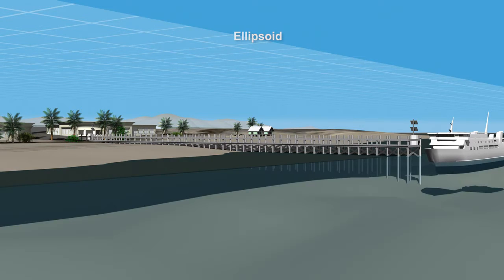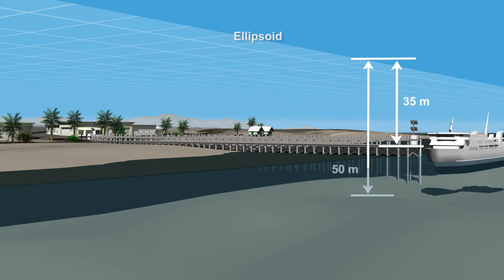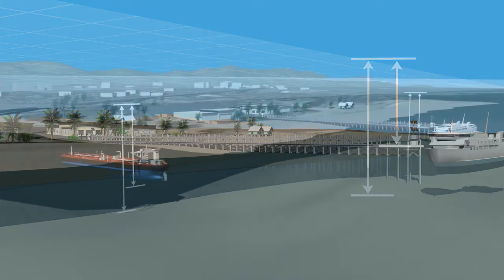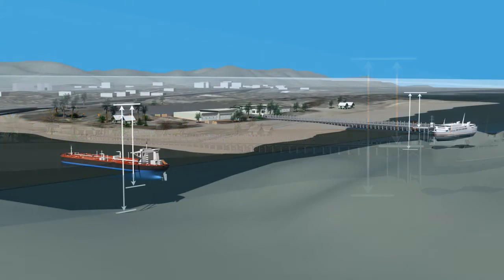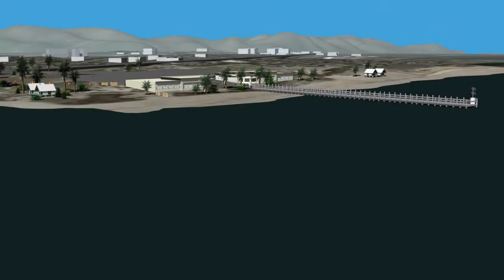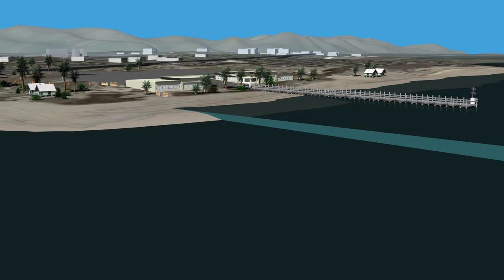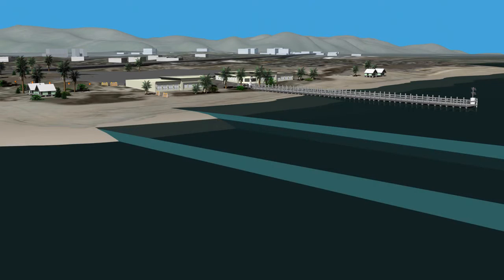LIDAR and sonar data tells us that our pier is 35 meters below the ellipsoid, and the seafloor is 50 meters below the ellipsoid. With this information, we might think we know enough to keep our ships from running aground. But, because water levels are always changing with tides and other meteorological and hydrodynamic effects, we need to use a different reference frame that accounts for changes in water level.